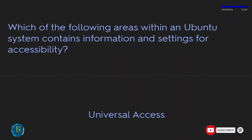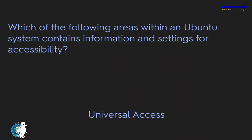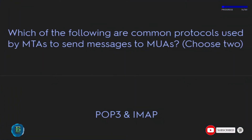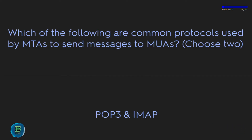Within an Ubuntu system, accessibility information and settings are found under Universal Access. Common protocols used by MTAs to send messages to MUAs are POP3 and IMAP.